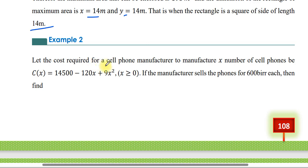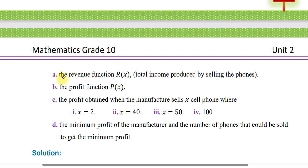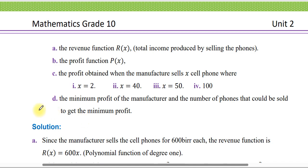Example 2: The cost required to manufacture X number of cell phones is C(X) = 14,500 minus 120X + 9X squared, where X ≥ 0. If the manufacturer sells the phones for 600 each, find: a) the revenue function R(X), b) the profit function P(X), c) the profit when X = 2, 14, 15, and 100, and d) the minimum profit and the number of phones to sell to get minimum profit.